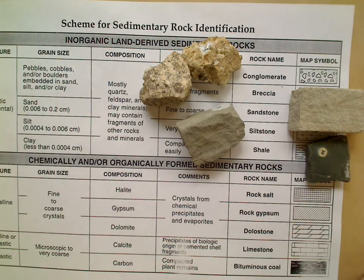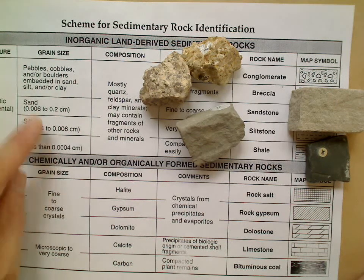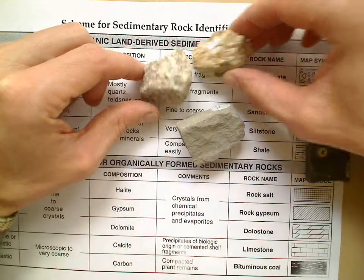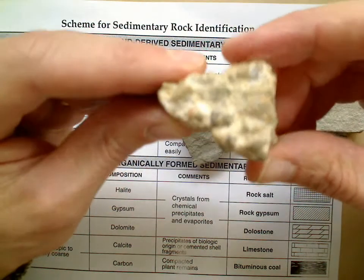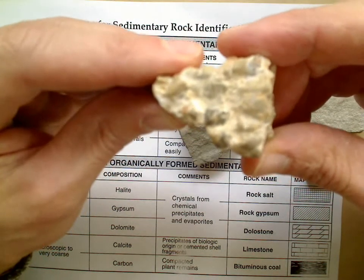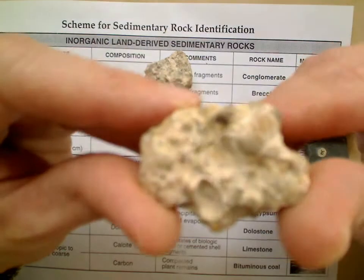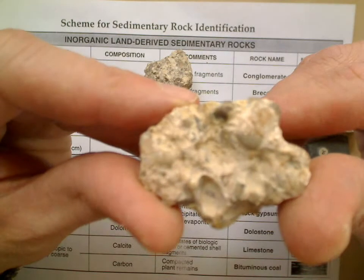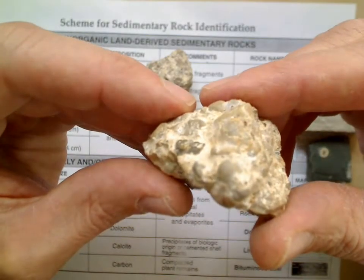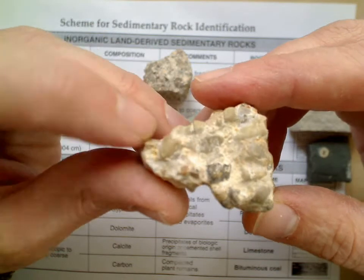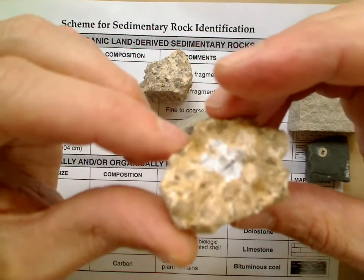Right away, as you go from the top to the bottom of the table, the size of the particles or fragments gets smaller — and the grain size does reflect that. Conglomerate, for instance, has rounded pebbles that are cemented together. You can see the pebbles in there.